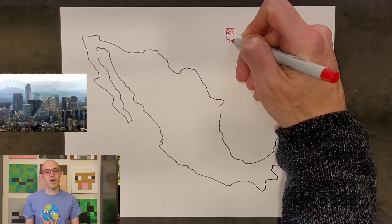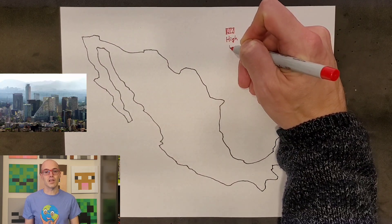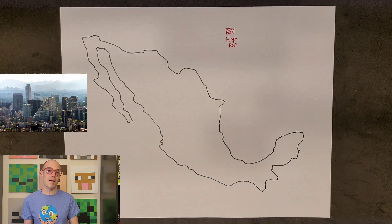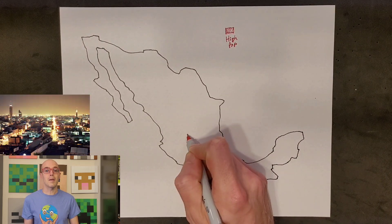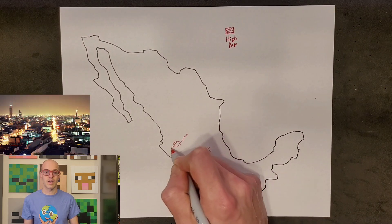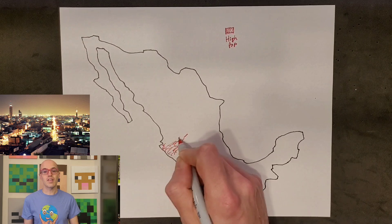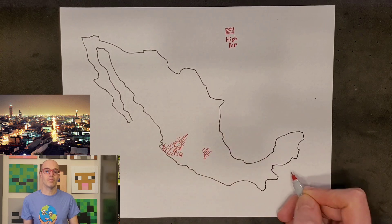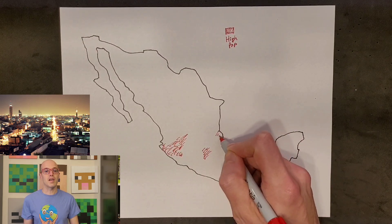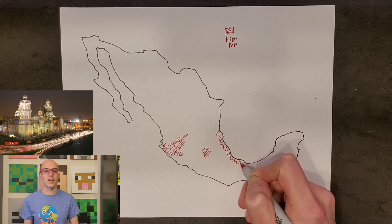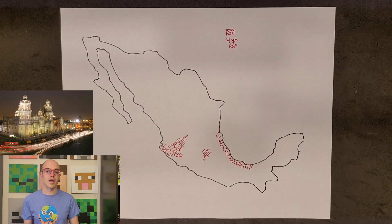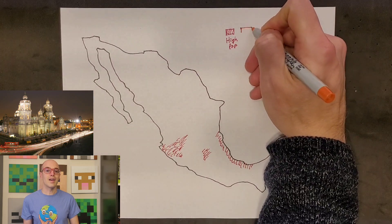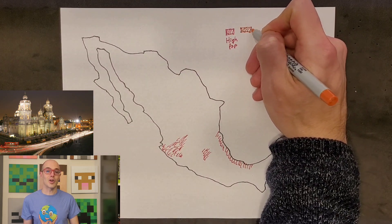Let's explore some of the major cities that make Mexico so captivating. The heart of Mexico lies in its capital city, Mexico City, a bustling metropolis teeming with over 20 million people. With its mix of modern skyscrapers and historic architecture, Mexico City offers visitors a unique blend of traditional culture and contemporary urban living.